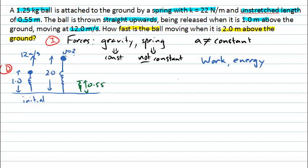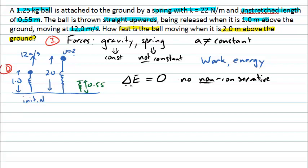An important piece of information is that the spring has an unstretched length of only 0.55 metres, so in all cases here the spring is actually much longer than its unstretched length. Since we're approaching this using work and energy, we consider the change in mechanical energy, which will be zero because there are no non-conservative forces acting. The only forces are gravity and the spring force — both conservative — so mechanical energy is conserved.